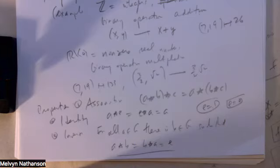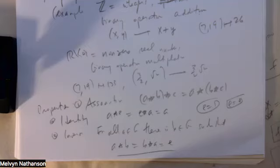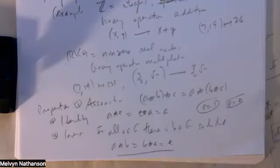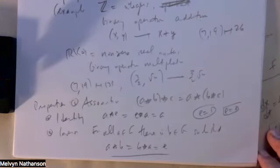People spend their lives studying groups because there is a very well-developed theory about them. We haven't talked about this much in cryptography, but all the codes we're using are really based on groups. Congruence classes mod m form an additive group, and non-zero congruence classes modulo a prime form a multiplicative group — that's the basis of the RSA cryptosystem.